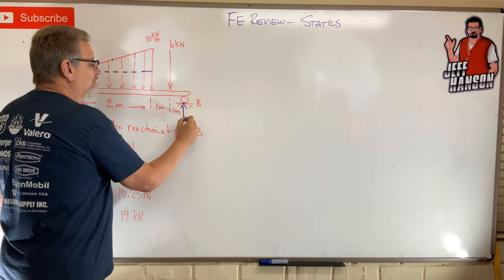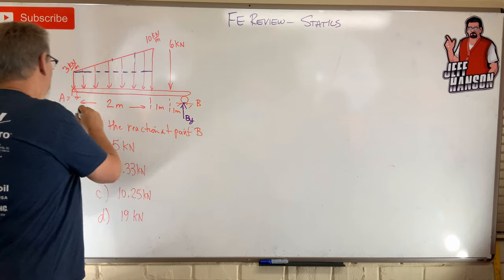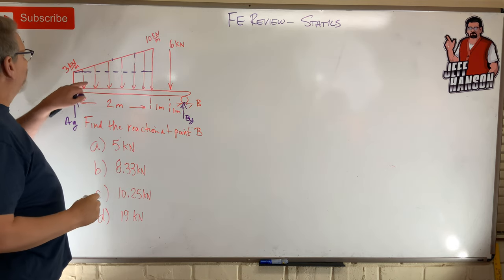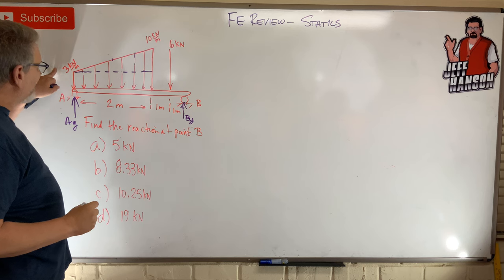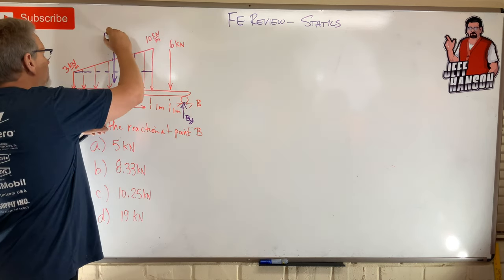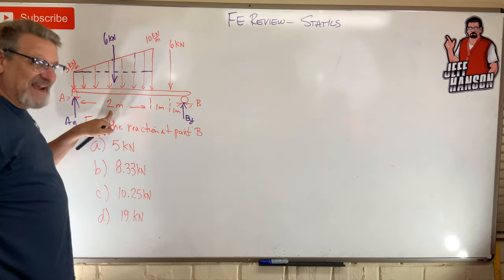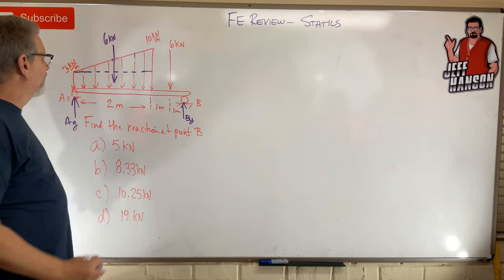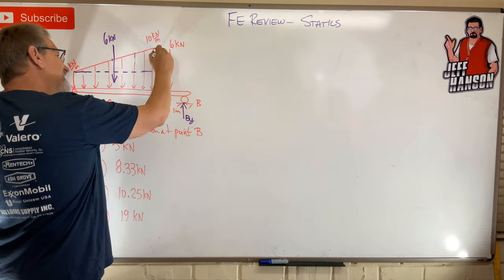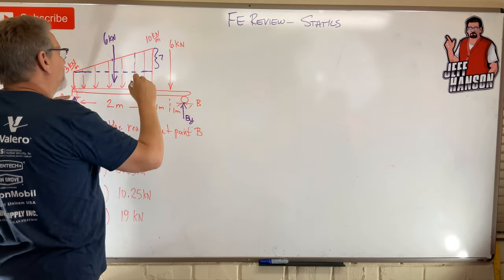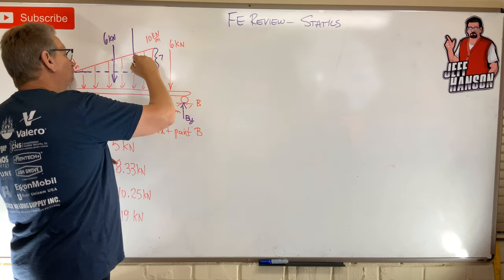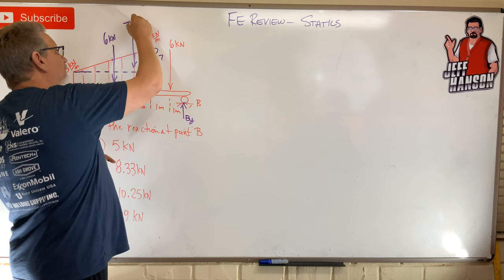I've got a reaction By over here and a reaction Ay over here. The rectangle portion is 3 tall by 2 wide, so 3 times 2 is 6 kN — applied at the centroid, which is right in the middle. Then for the triangle: if the full height is 10 and the rectangle is 3, the triangle height is 7, so 7 times 2 divided by 2 is 7 kilonewtons.